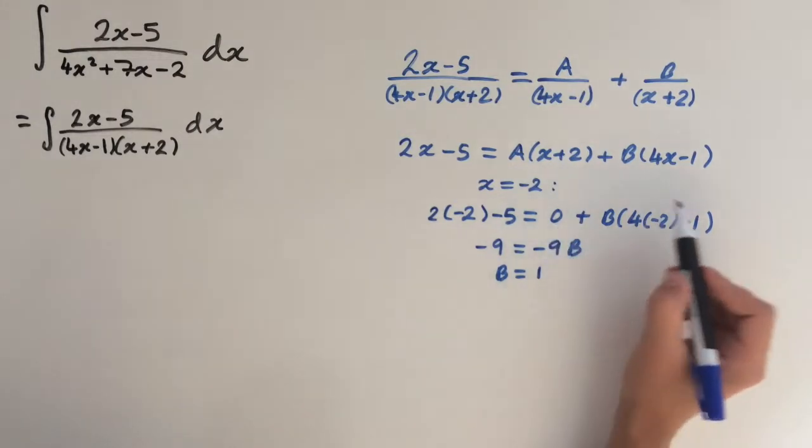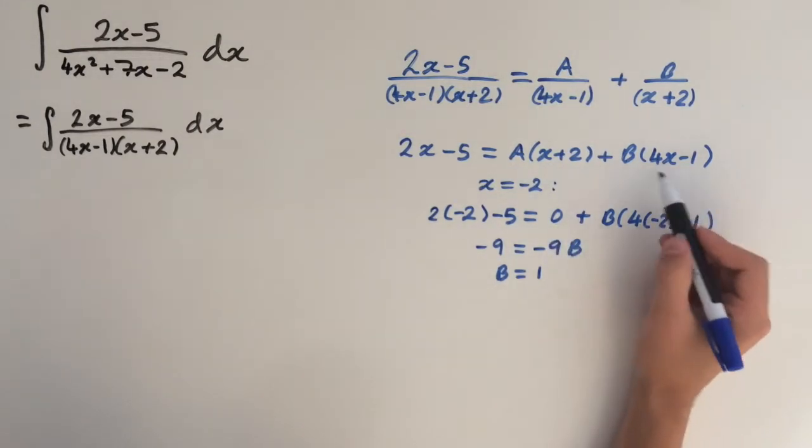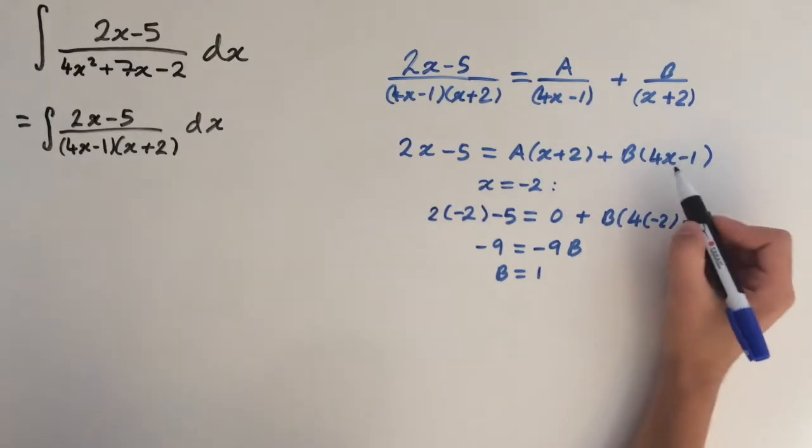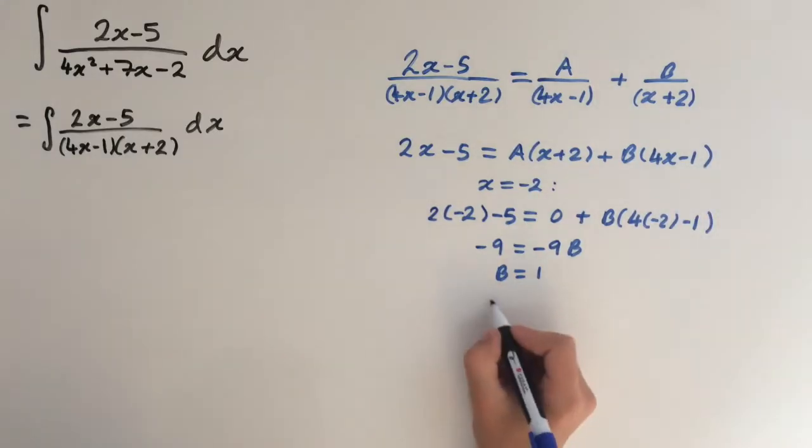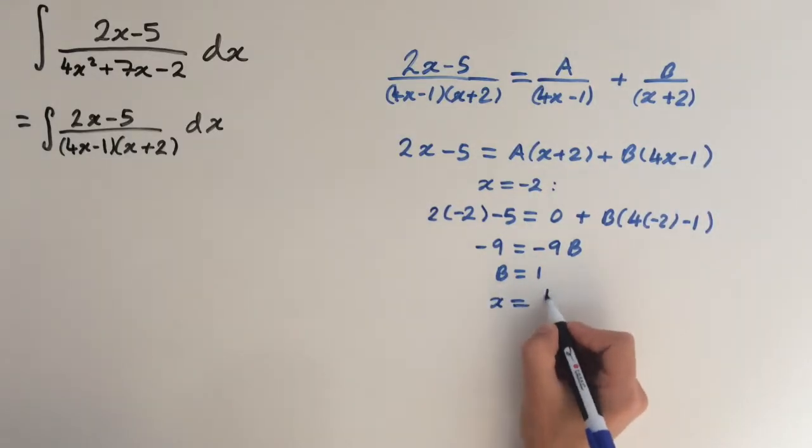So now we want to let x equal a different value, so we want to make this bracket here equal 0. So x is going to have to equal 1 over 4, so this equals 1, and 1 minus 1 is 0. So we let x equal a quarter.